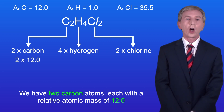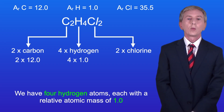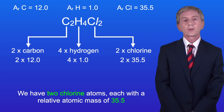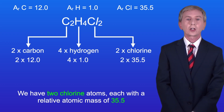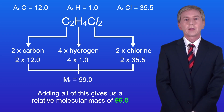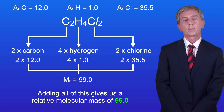I'm showing you here the molecular formula of the covalent compound dichloroethane, which contains two carbon atoms, four hydrogen atoms, and two chlorine atoms. We have two carbon atoms each with a relative atomic mass of 12.0, four hydrogen atoms each with a relative atomic mass of 1.0, and two chlorine atoms each with a relative atomic mass of 35.5. Adding all of this gives us a relative molecular mass of 99.0.